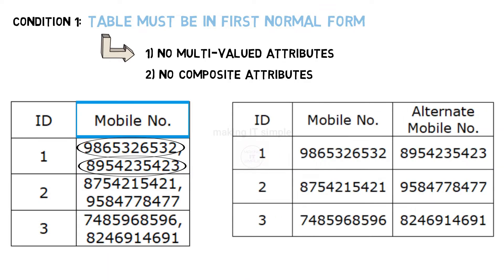If we modify this table into this, then it can be in 1NF because each column is single valued. Let us take another example.